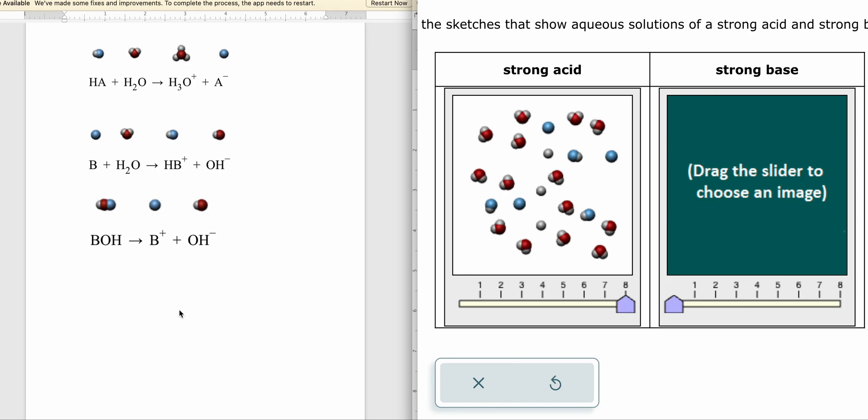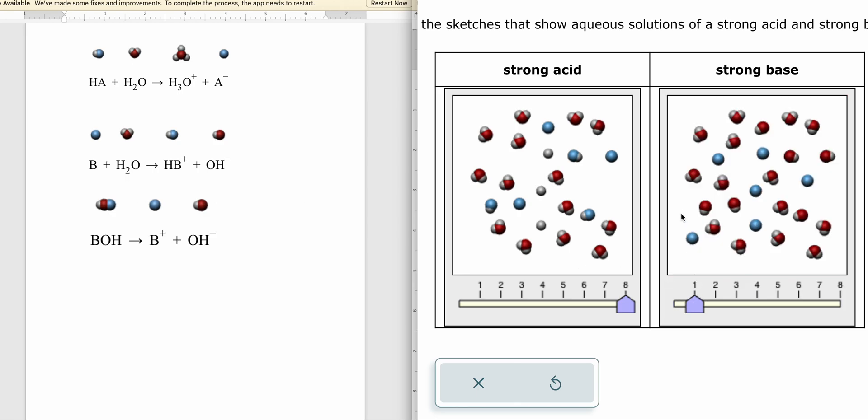So now let's look over here at the strong base. We're looking for the BOH to 100% break apart into B plus and OH minus. If we have any of these BOH's left, it's not a strong base. So if we take a look here, in our very first example, see how we have B pluses and OH minuses all over the place, and then we have water molecules. So from the very start, the very first example we have is a strong base.